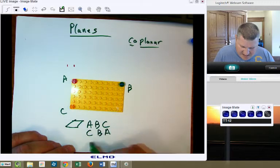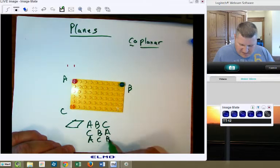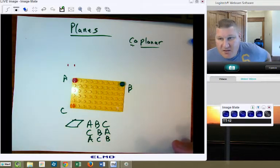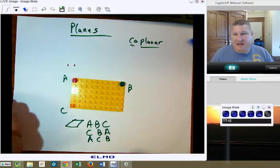By the way, it could be C, B, A. A, C, B. It doesn't make any difference whatsoever because they're all three on the plane so it doesn't matter.